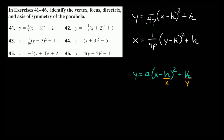These two equations up here are very similar. The only difference between the standard vertex form and the parabola form is our 'a' number. Instead of just having 'a' — which is just some coefficient, it can be positive, negative, big, small, or a fraction — in this case it's giving us a more specific a: it's 1 over 4p. P just stands for where the focus is. The rest is the same: x minus h in parentheses squared plus k, where h and k are your x and y coordinates for your vertex.